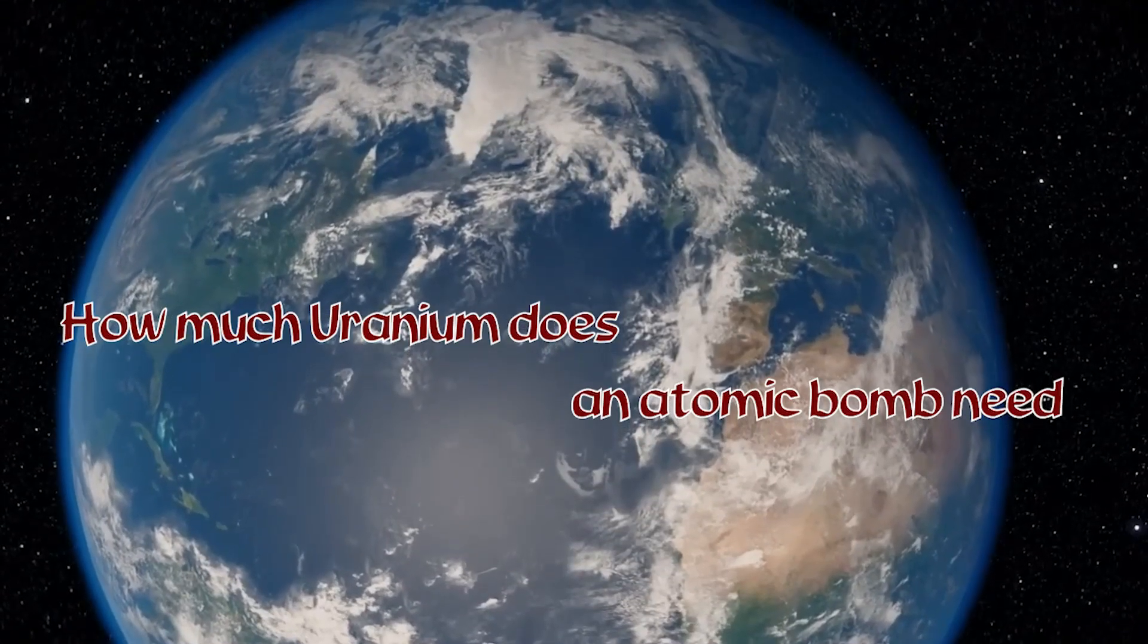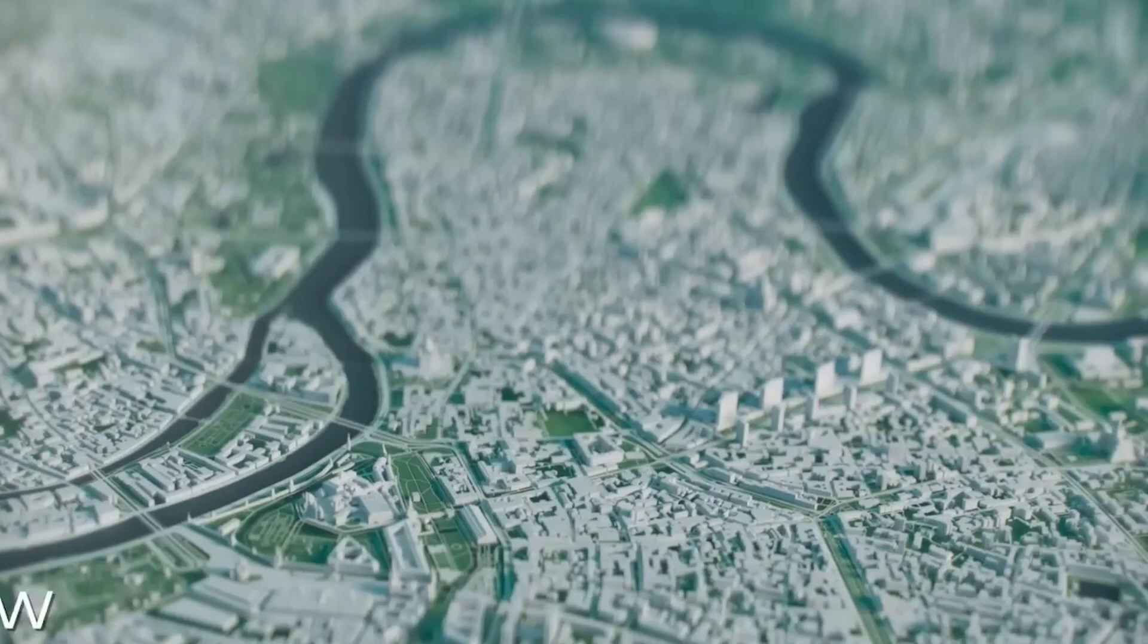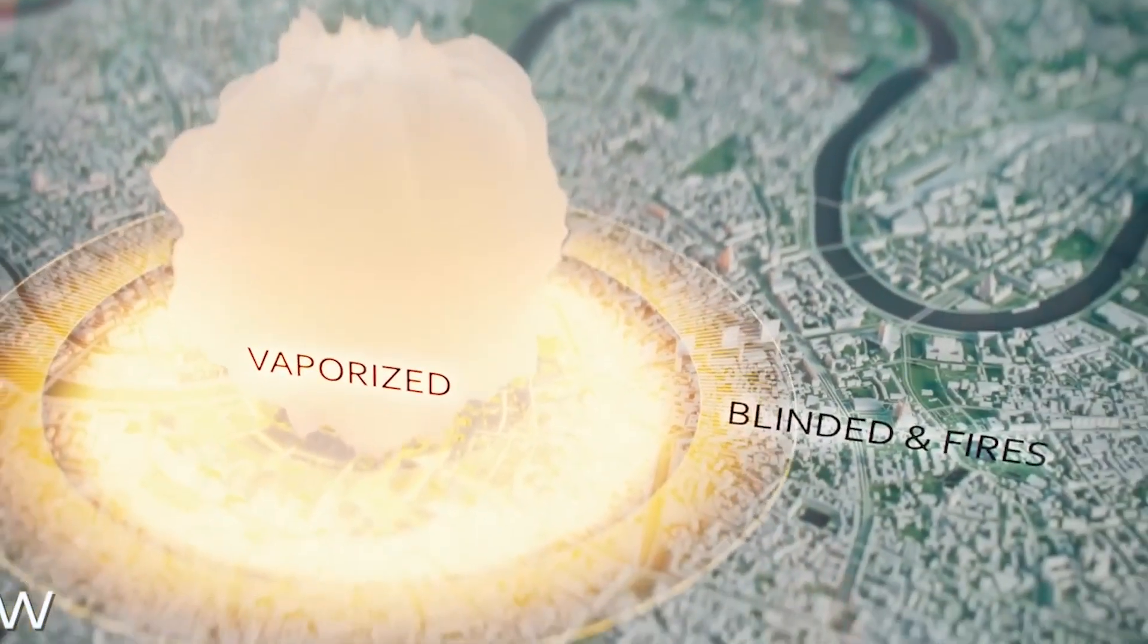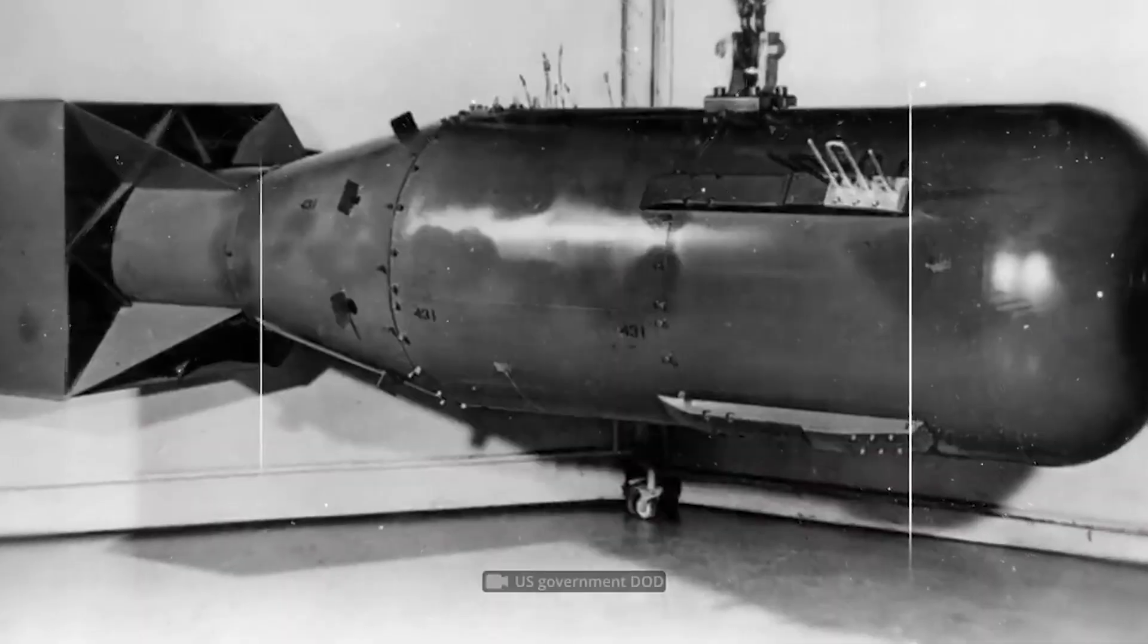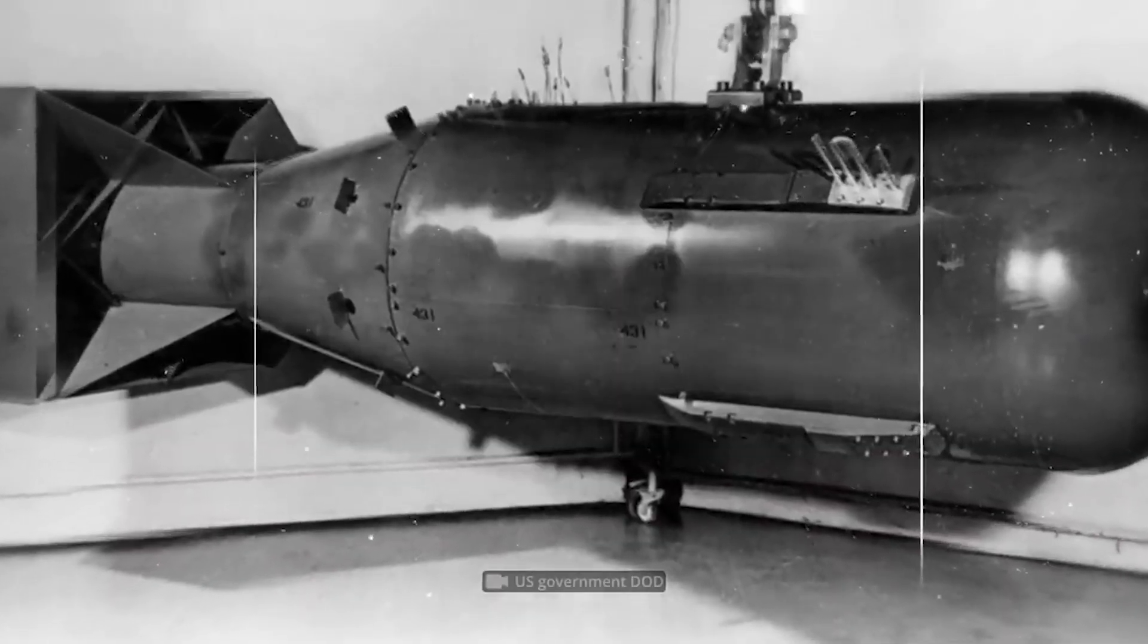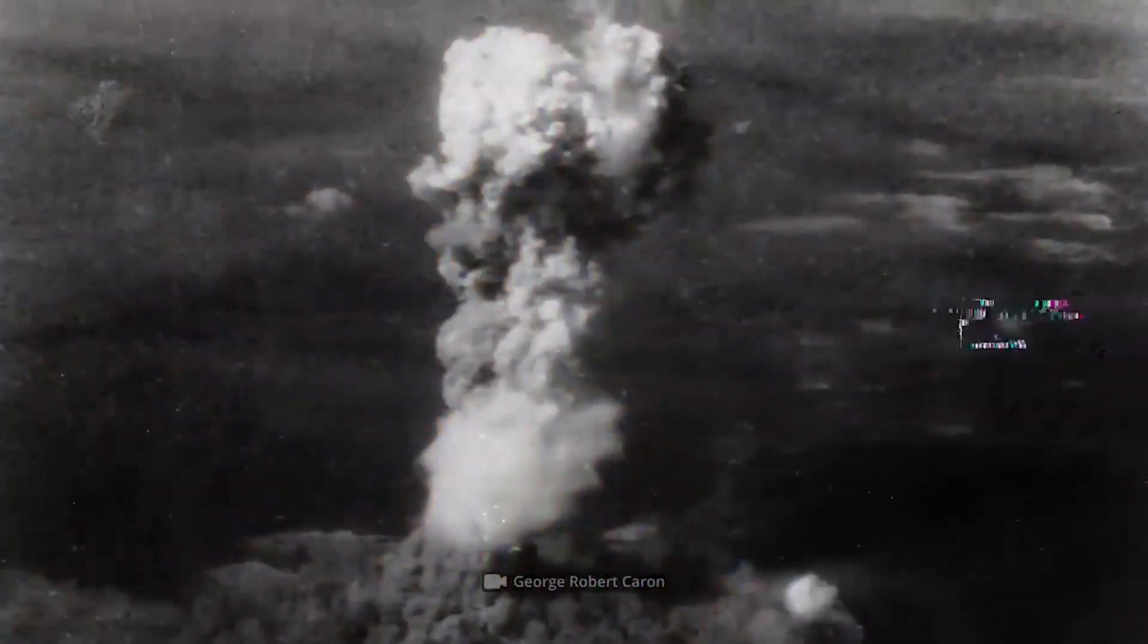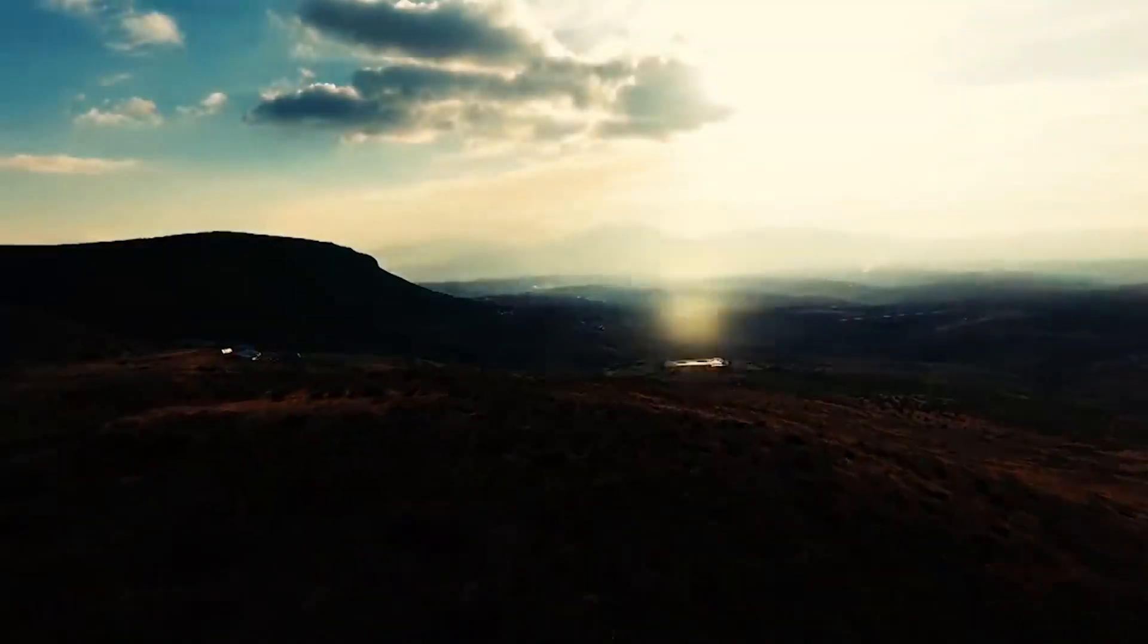How much uranium does an atomic bomb need? It seems that about 20 kilograms of uranium, enriched to 90% of uranium-235, is enough to make a nuclear weapon. After enrichment, uranium must be turned into a metal through a series of processes to make various parts of the bomb. After doing this, about 20% of the substance is lost.